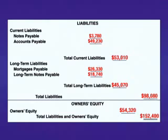We enter our long term liabilities: mortgages payable $26,330, long term notes payable of $18,740. We add these to get long term liabilities of $45,070. We add the current liabilities and the long term liabilities to get total liabilities of $98,080.